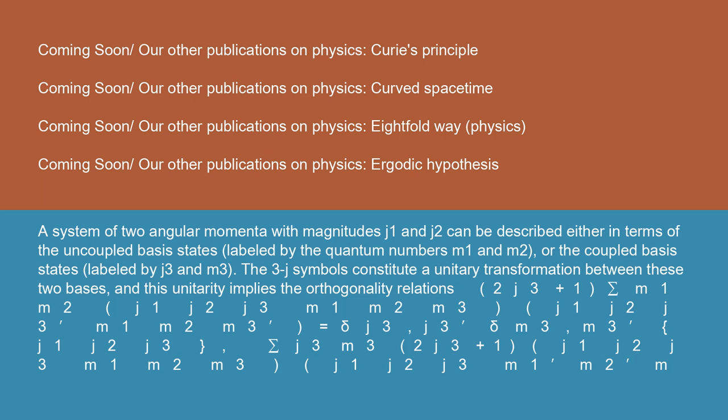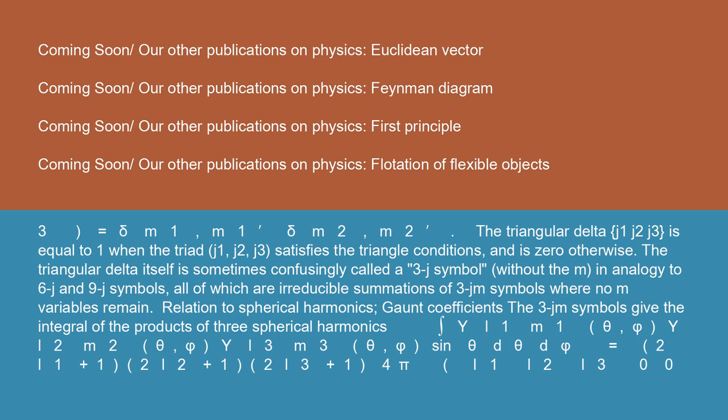A system of two angular momenta with magnitudes j1 and j2 can be described either in terms of the uncoupled basis states, labeled by the quantum numbers m1 and m2, or the coupled basis states, labeled by j3 and m3. The 3J symbols constitute a unitary transformation between these two bases, and this unitarity implies the orthogonality relations: (2j3 + 1) Σ_{m1,m2} (j1 j2 j3; m1 m2 m3) (j1 j2 j3'; m1 m2 m3') = δ_{j3,j3'} δ_{m3,m3'}. And Σ_{j3,m3} (2j3 + 1) (j1 j2 j3; m1 m2 m3) (j1 j2 j3; m1' m2' m3) = δ_{m1,m1'} δ_{m2,m2'}.